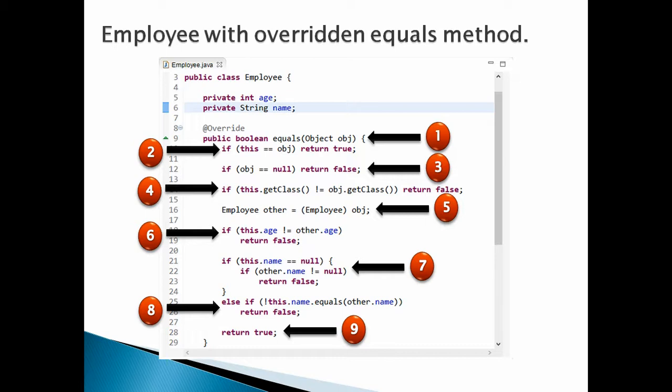Number six, after typecasting the object to Employee, we now have to make checks for the actual equality of both objects based on the properties such as name and age. The first check is done on age: if this.age is not equal to other.age, return false. Number seven, the second check is made on the string property name. As name refers to a String object, first we make a check on null values: if this.name is null, then check the null value of name for the incoming object — if it is not null, then return false.